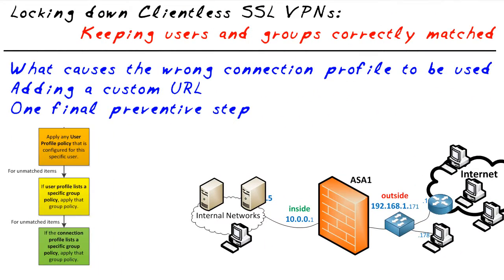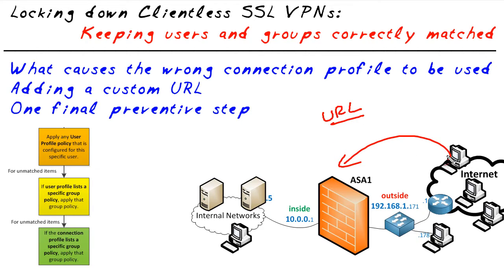In this micro nugget, we're going to take a look at solving the problem of having users that connect and get into the wrong connection profile. Here's the play by play: when a user connects, the ASA is going to associate that user with a connection profile based on the URL that they connected to, or possibly by giving a drop-down menu to the user — even worse. If the user picks the wrong connection profile and authenticates, the policies from that user profile get applied, and anything not specifically listed in that profile will have the group policy applied, which is logical.